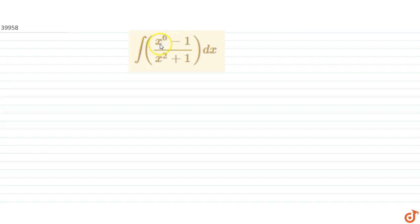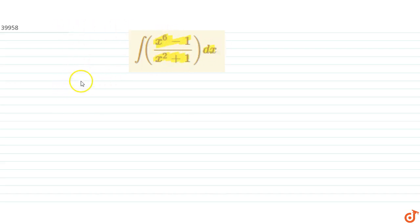In this question we have to integrate x to the power 6 minus 1 divided by x square plus 1 dx. First of all we will divide the polynomial x to the power 6 minus 1 by x square plus 1.